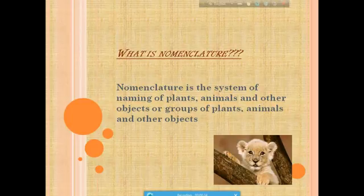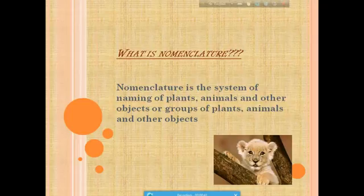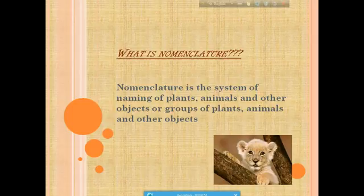Scientific names are the language of taxonomists. When a taxonomist identifies and describes a natural group of animals, he gives appropriate scientific names to the groups. Common names do not serve the purpose because a particular animal is known by different names in different parts of the world.